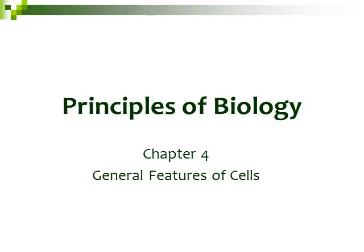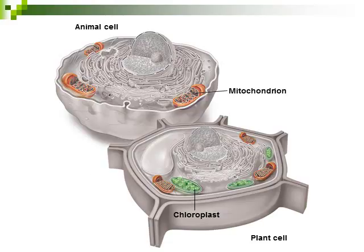This is part 5 of 5 on chapter 4, General Features of Cells. In this part of the chapter, we're first going to be looking at the energy-related organelles, and then we'll be looking at three different types of protein sorting. We already talked about one protein sorting pathway in the last section, but we're going to start off with our energy-related organelles.